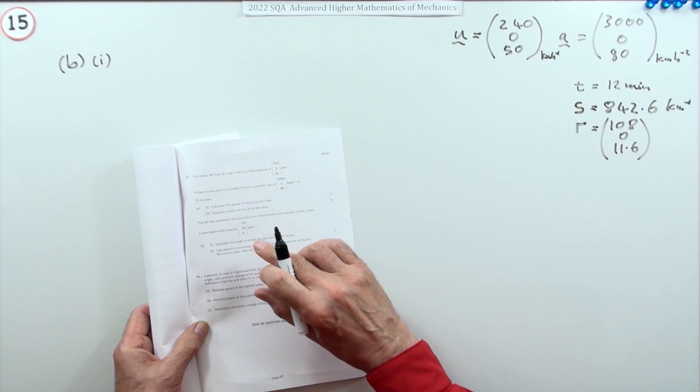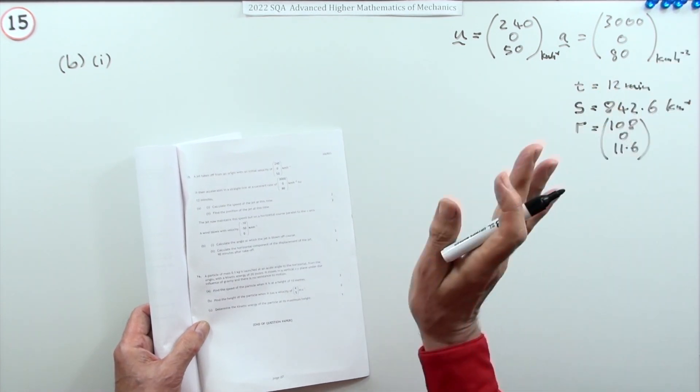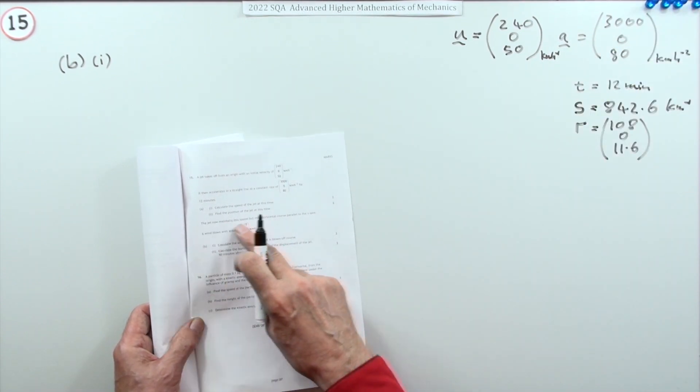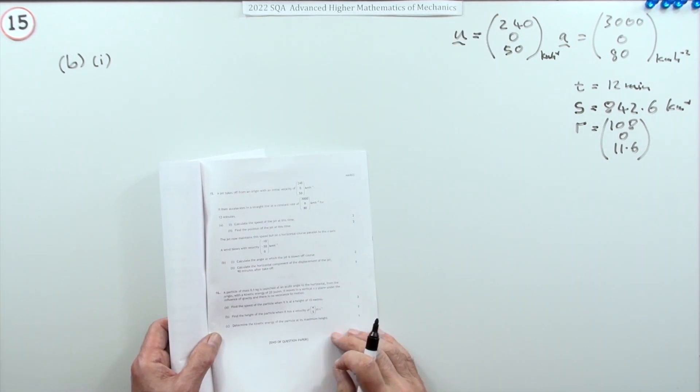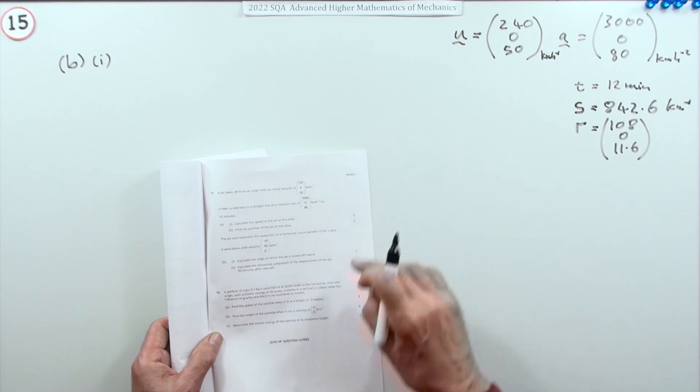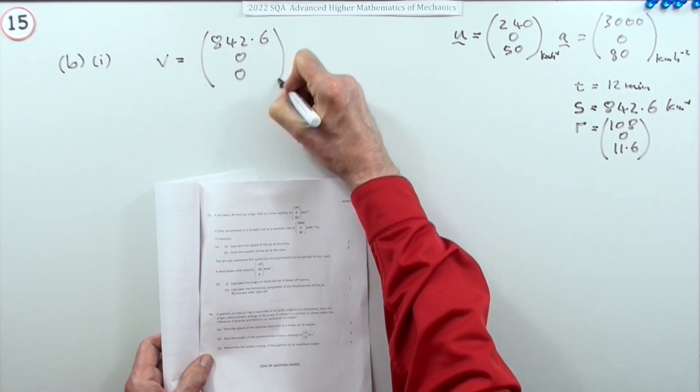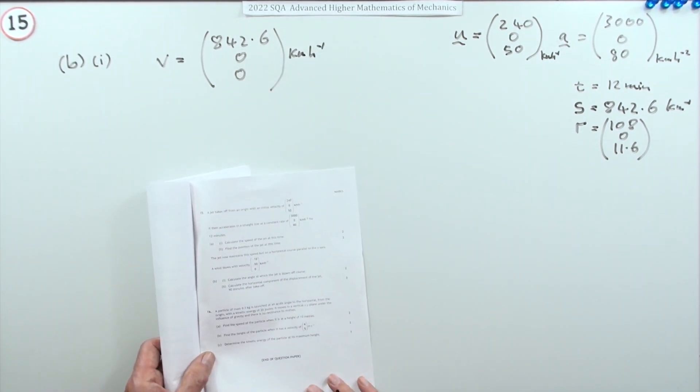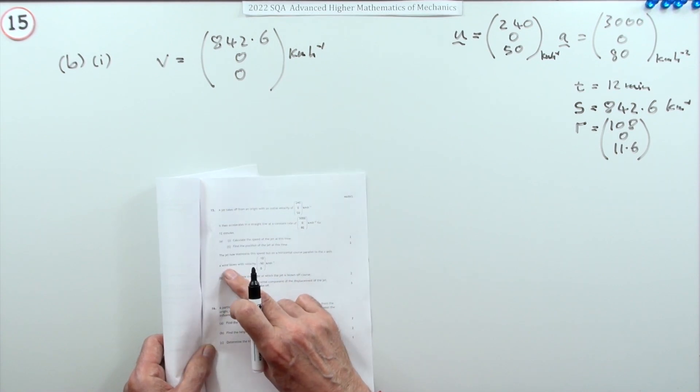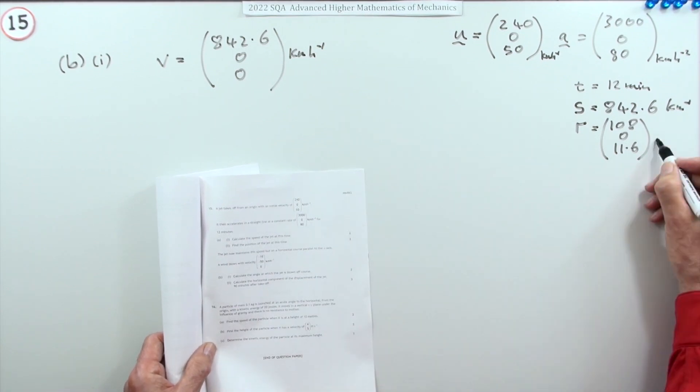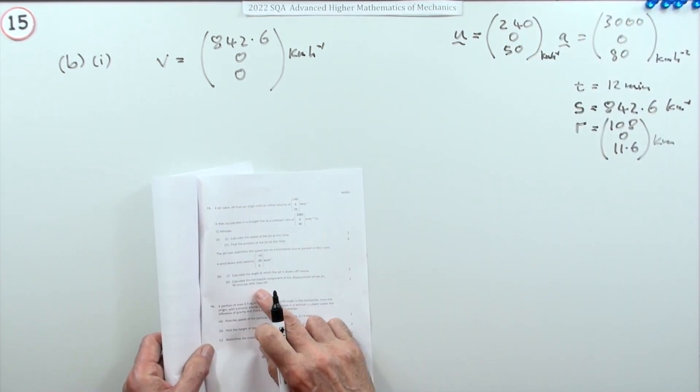Part b: The jet now maintains this speed, 843 kilometers an hour, which was going off at an angle to the ground, but now maintains that speed on a course that's parallel to the x-axis. So it's flying level along the x-axis direction, so that speed will be that x component of the velocity. Its new speed is 842.6 kilometers per hour. Now that it's leveled off into steady flight, a wind blows at that height, 11.6 kilometers up.